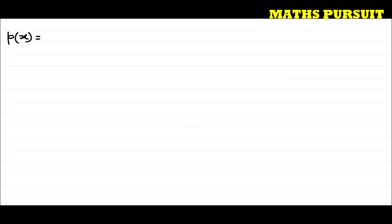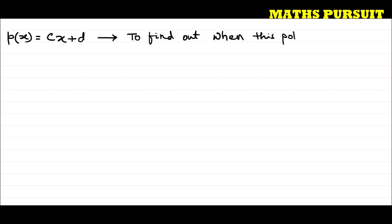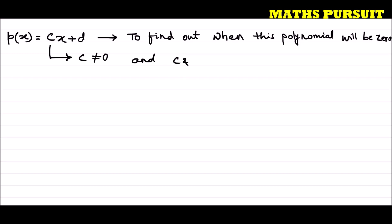The question has given us the polynomial p(x) = cx + d, and is asking us to find out when this polynomial will be zero. The question has also informed us that c is not equal to zero, and that c and d are real numbers. These are extra conditions that the question has given us.